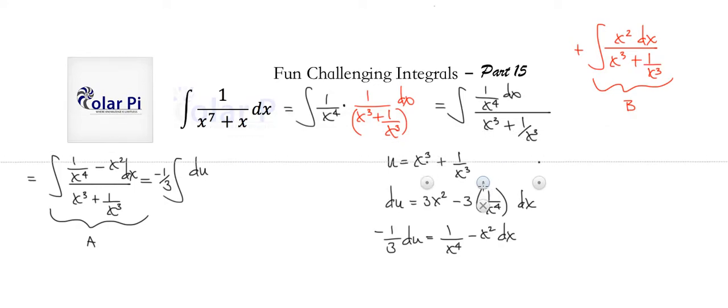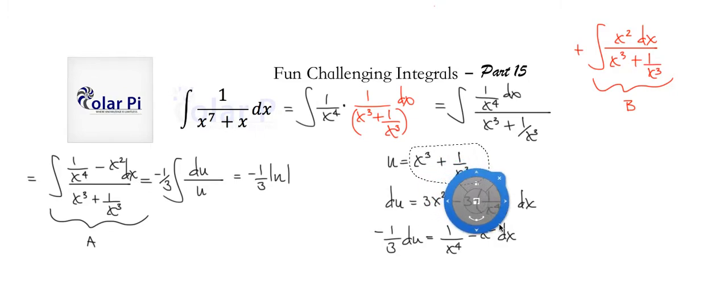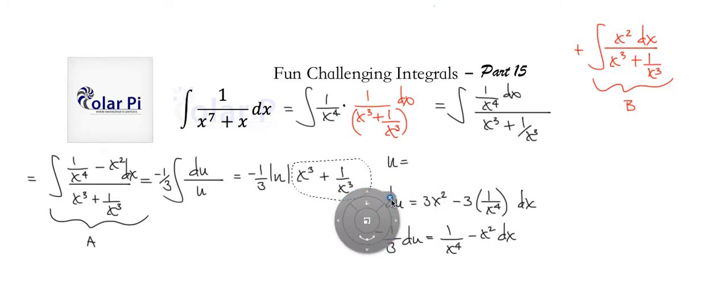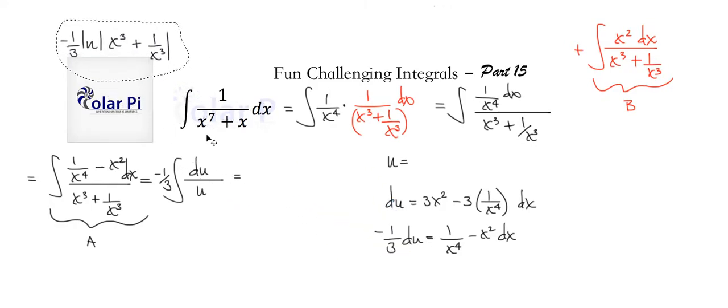du divided by what? Du divided by u, because the entire denominator is what we said is u. So then, this is going to turn into negative 1 third, the natural log of u. But u is this guy right here, so natural log of u, and this completes integral a, and so we just have left integral b to work on, and then we'll be done.